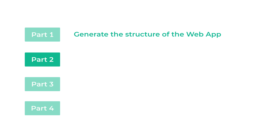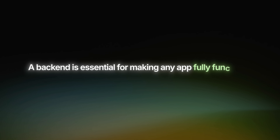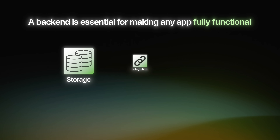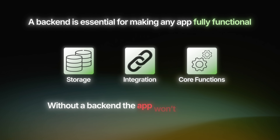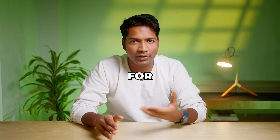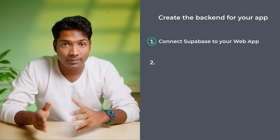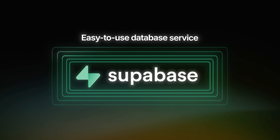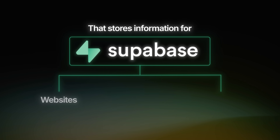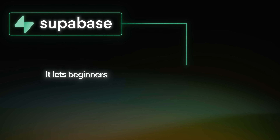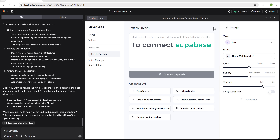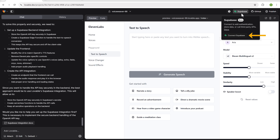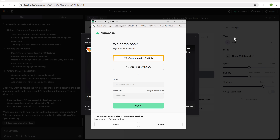So to keep the API key secure, we need to set up a backend server for our web app. Let's go to part two, which is to create a backend server for our app. A backend is essential for making any app fully functional — it handles storage, API integrations, and all the core functionalities. Without a backend, the app won't work properly. To create a backend, we need to connect our web app to Supabase. Go to Supabase, click connect Supabase, and sign in with your GitHub account.